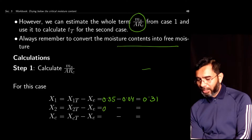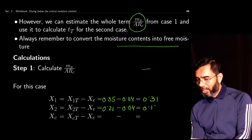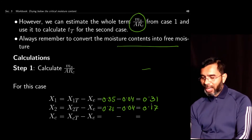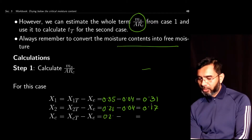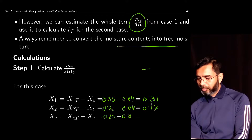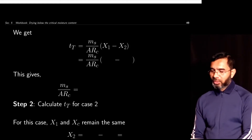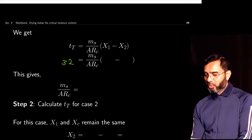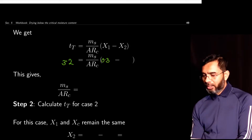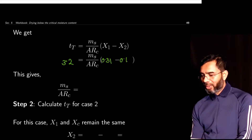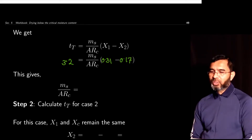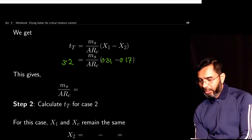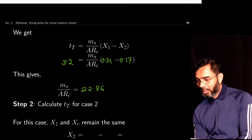For Xc, the critical moisture is 20%, so Xc (free) = 0.20 − 0.04 = 0.16. Plugging in these values with t_t = 3.2 hours, X1 = 0.31, and X2 = 0.17, we can solve for Ms/(A·Rc) to be 22.86 hour·(mass solid)/(mass moisture).